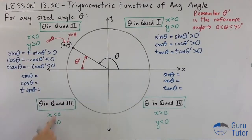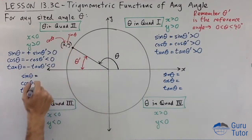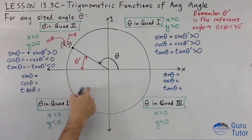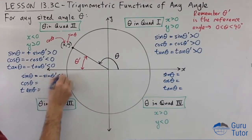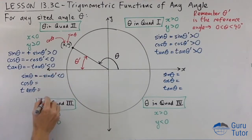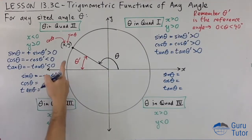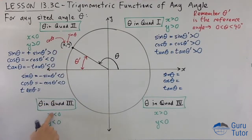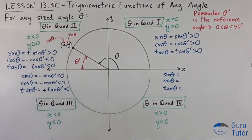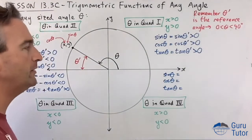In the third quadrant, x and y are both negative. Sine is always the y coordinate, which is negative, so it's negative sine theta dash. Cosine is always the x coordinate, which is also negative. Tan is y divided by x — both negative — so dividing gives a positive result. Tan is positive in the third quadrant; sine and cosine are negative.